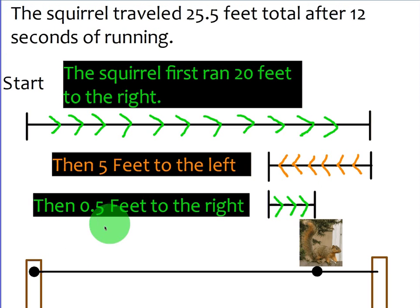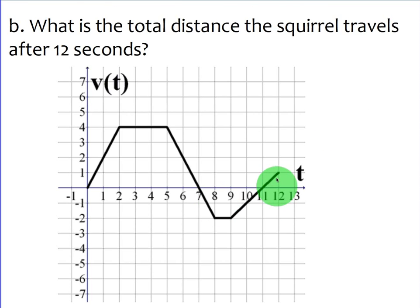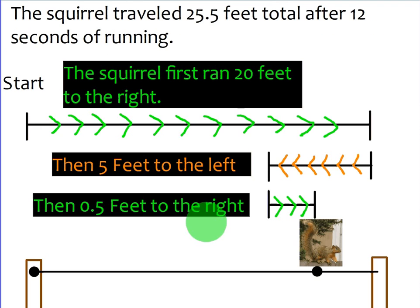And then finally, 0.5 feet to the right, which was this little triangle at the end that we formed. And so if you add this plus this plus this, that gives you the squirrel's total distance of 25.5 feet. That's it for this example of total distance. If you have any other questions about this, let me know.